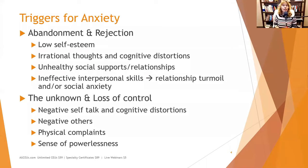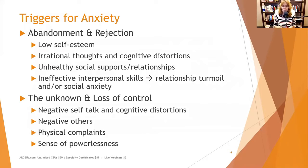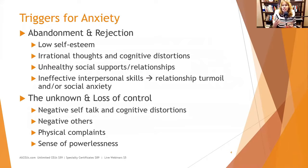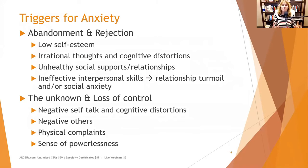These are four areas to look at when assessing clients. Another issue is the unknown and loss of control. Negative self-talk and cognitive distortions can contribute — if I don't have control of everything, then it's all going to be a disaster. Negative others also matter. When people hang out with negative, pessimistic, conspiracy-minded people, that anxiety can be palpable and permeate their environment.